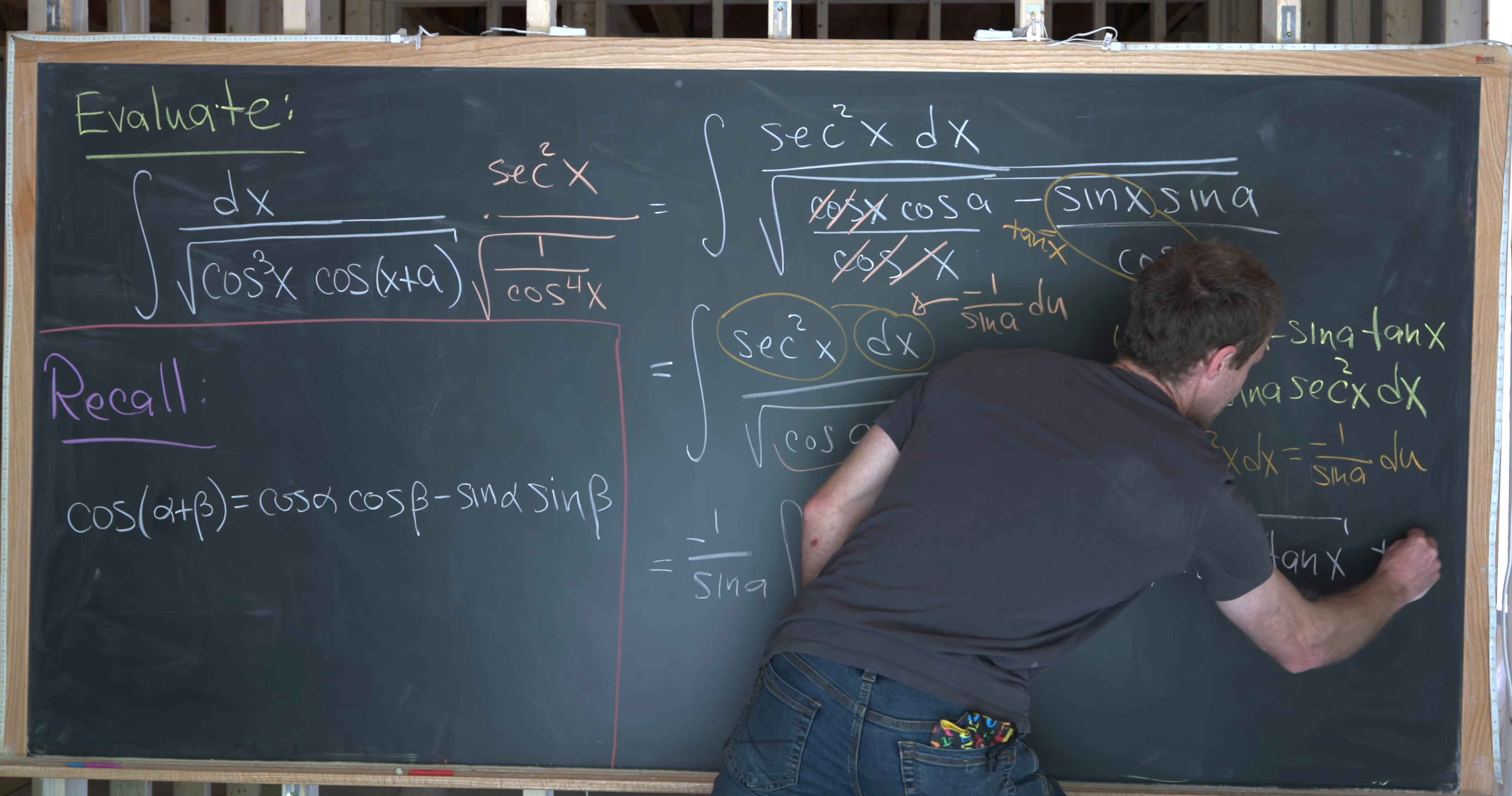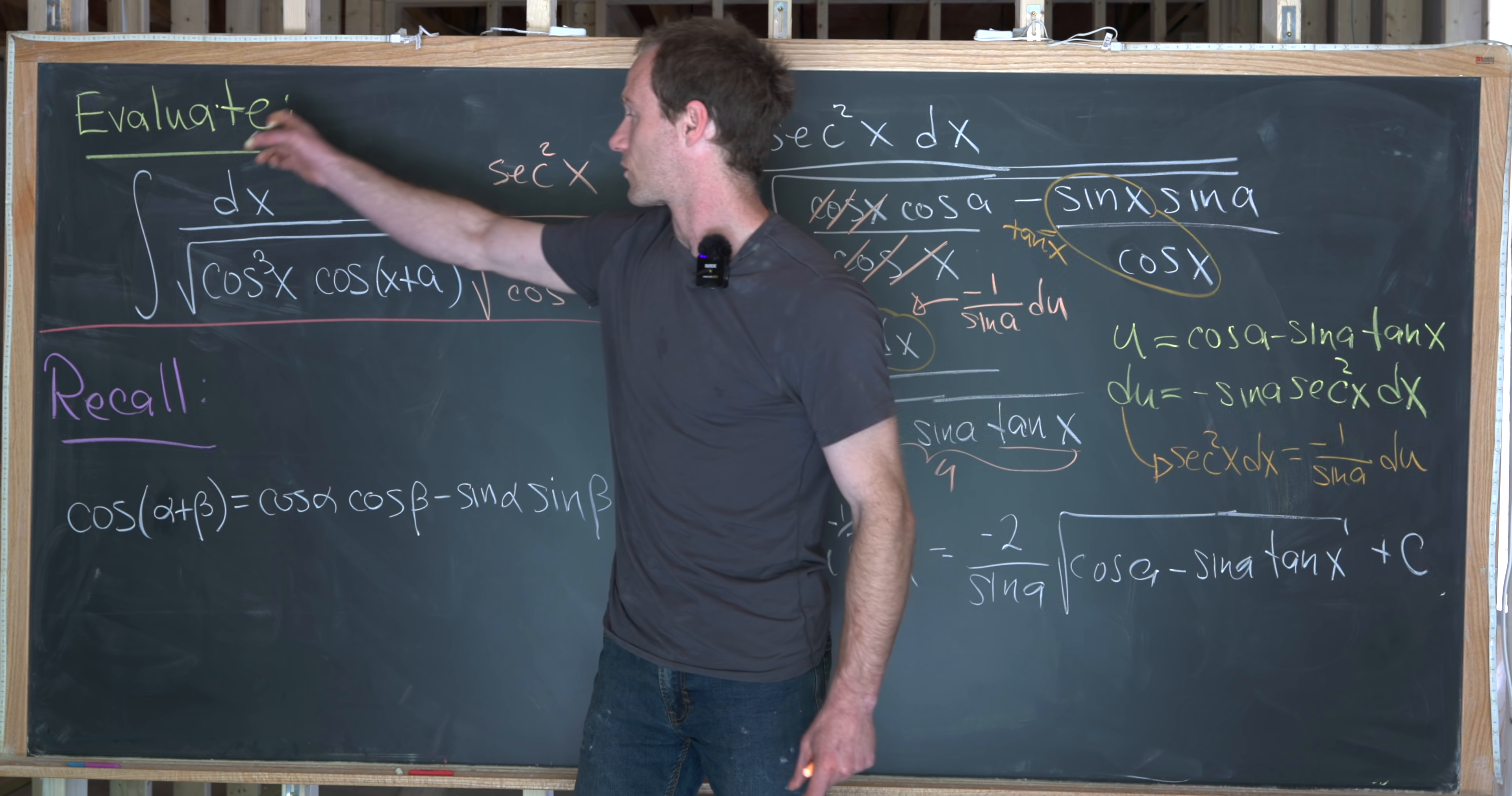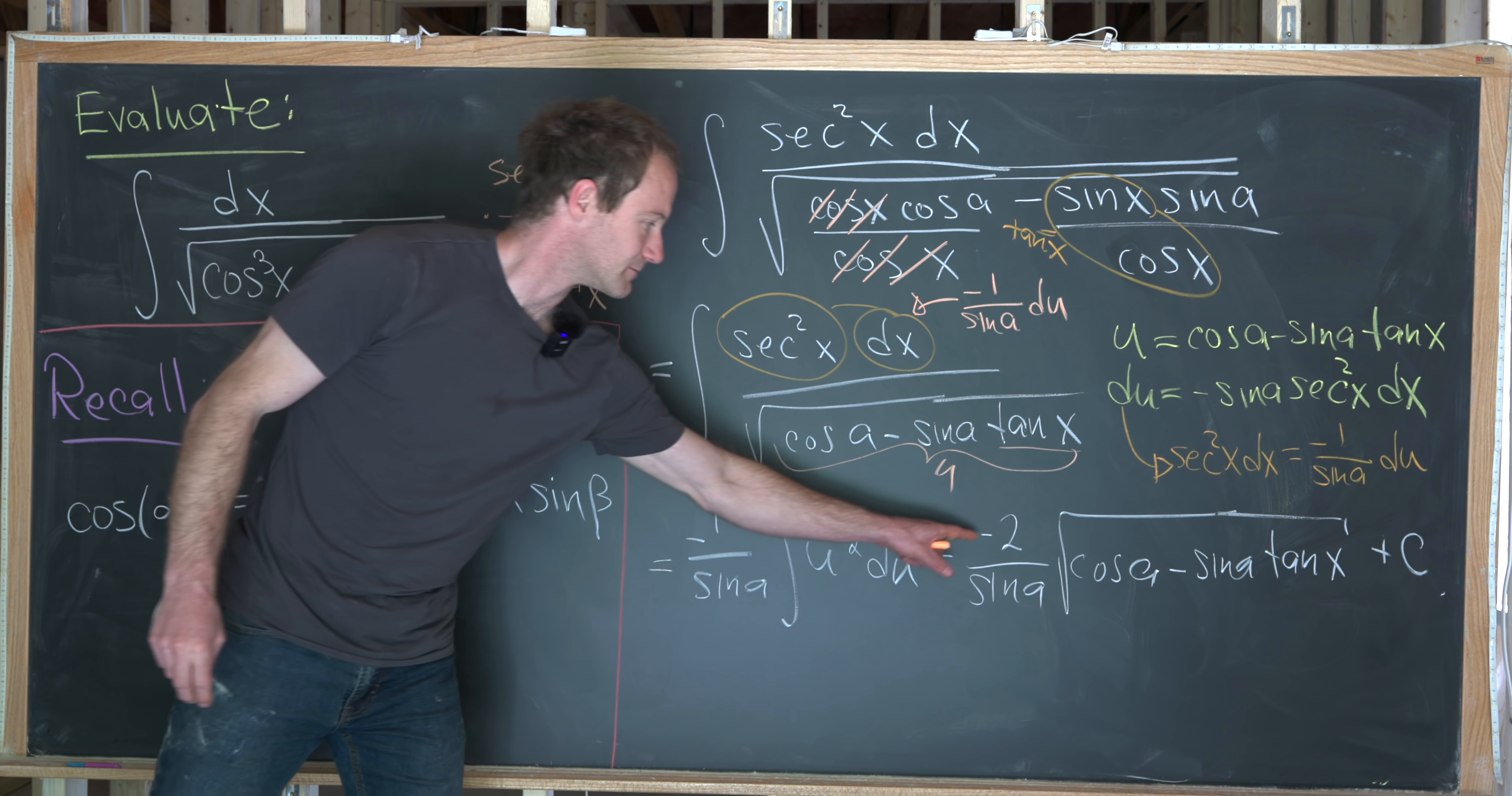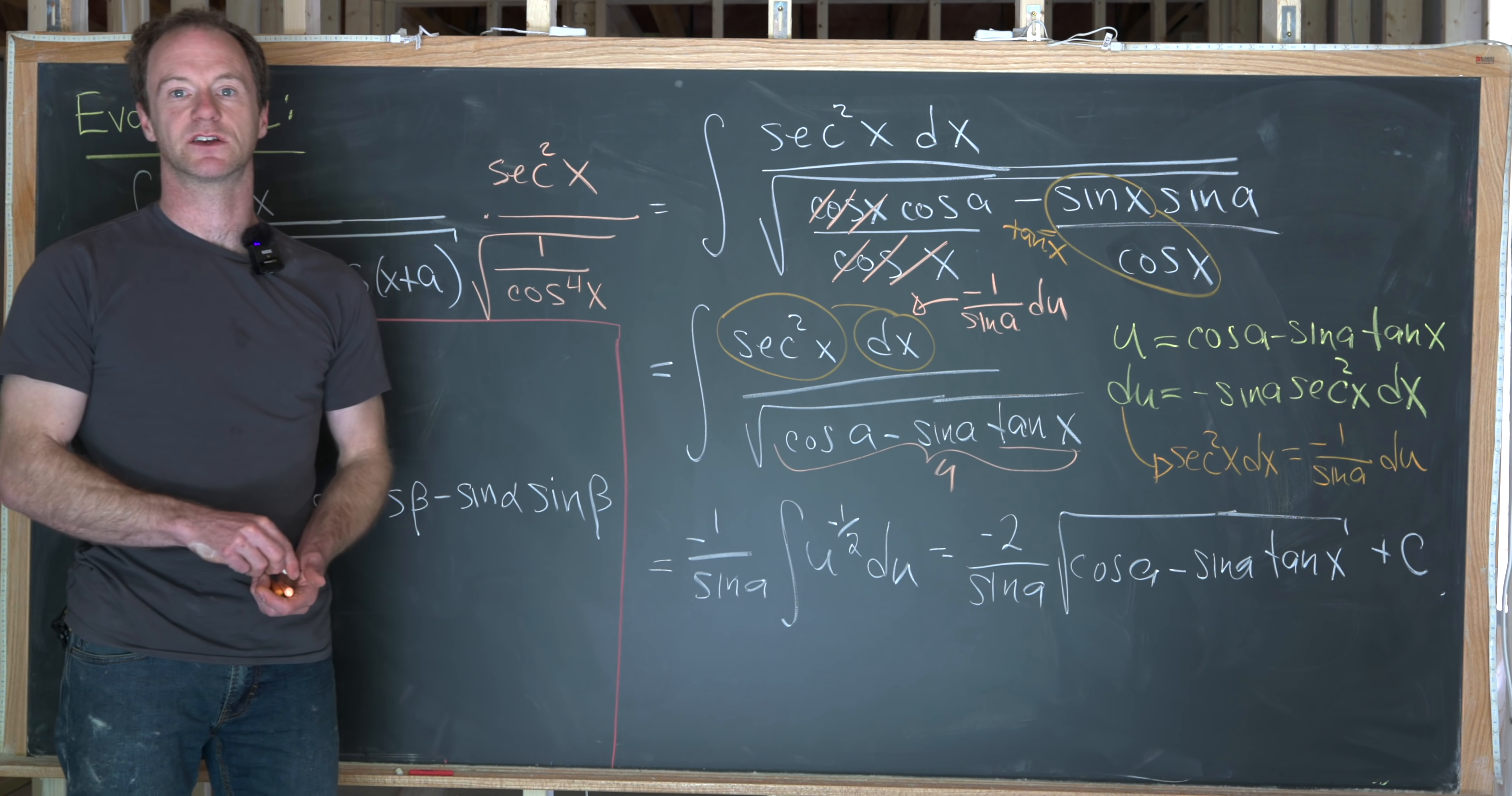And we can't forget the plus c for our integration constant. So let's see what we've got. The integral or the antiderivative of this function has been evaluated down to this: minus two over sine a square root of cosine a minus sine a tan x plus the constant. And that's a good place to stop.